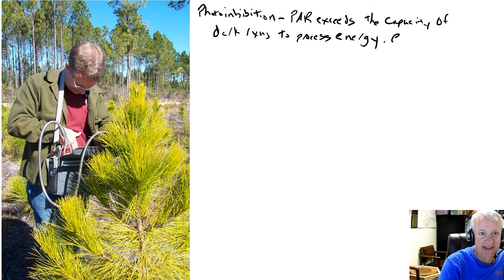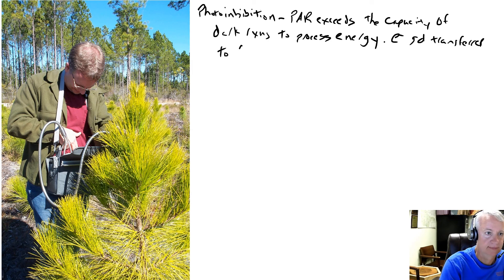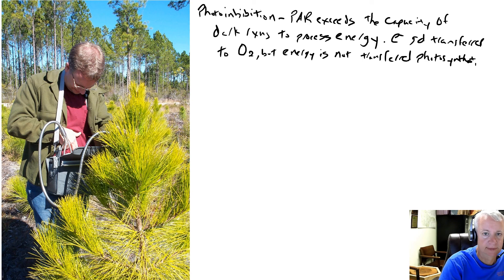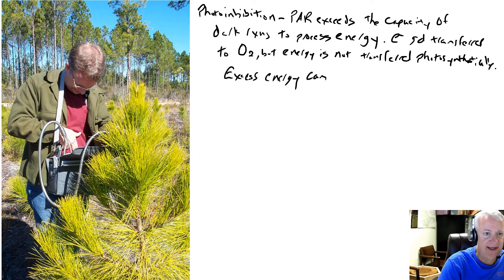When that happens, electrons get transferred to oxygen, but energy is not transferred photosynthetically. So that excess energy can damage photosystems.